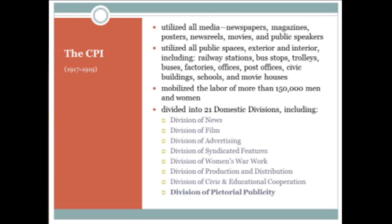To accomplish this amount of work, the CPI was divided into 21 domestic divisions and 16 foreign ones — though these numbers vary by source. These divisions ultimately mobilized the efforts of more than 150,000 men and women. The domestic divisions included divisions of news, film, advertising, syndicated features, women's war work, production and distribution, and the Division of Pictorial Publicity — the DPP — which oversaw the production of the war posters.